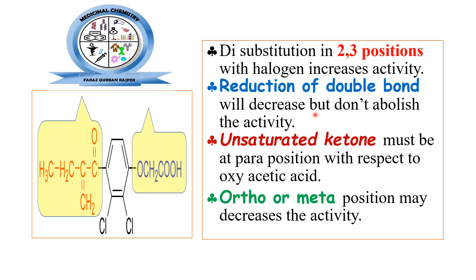Reduction of the double bond in the side chain of ethacrynic acid decreases but does not abolish the activity. The unsaturated ketone must be para to the oxyacetic acid region. If it is moved to the ortho or meta position, diuretic activity decreases. This concludes the medicinal chemistry of loop diuretics.